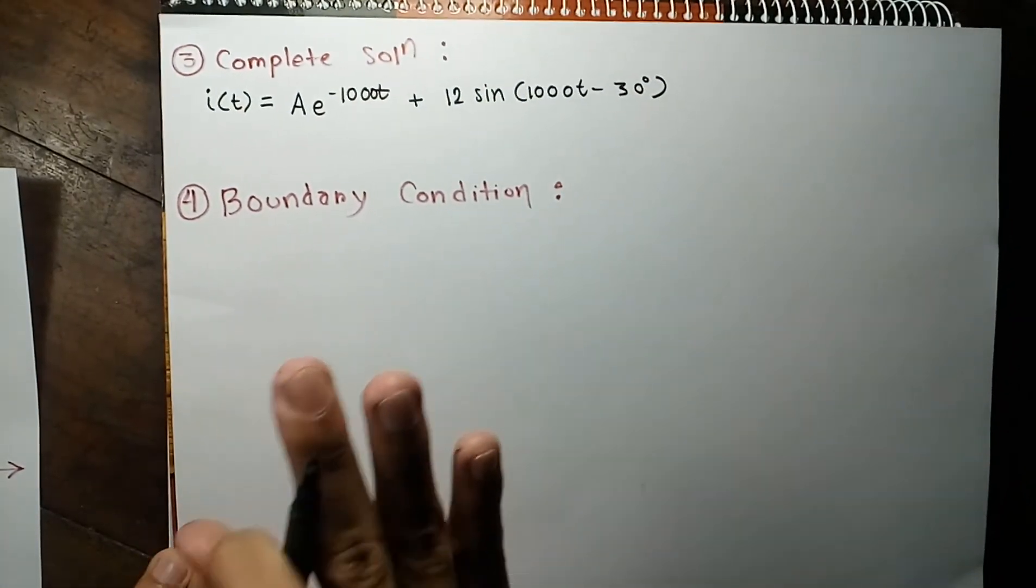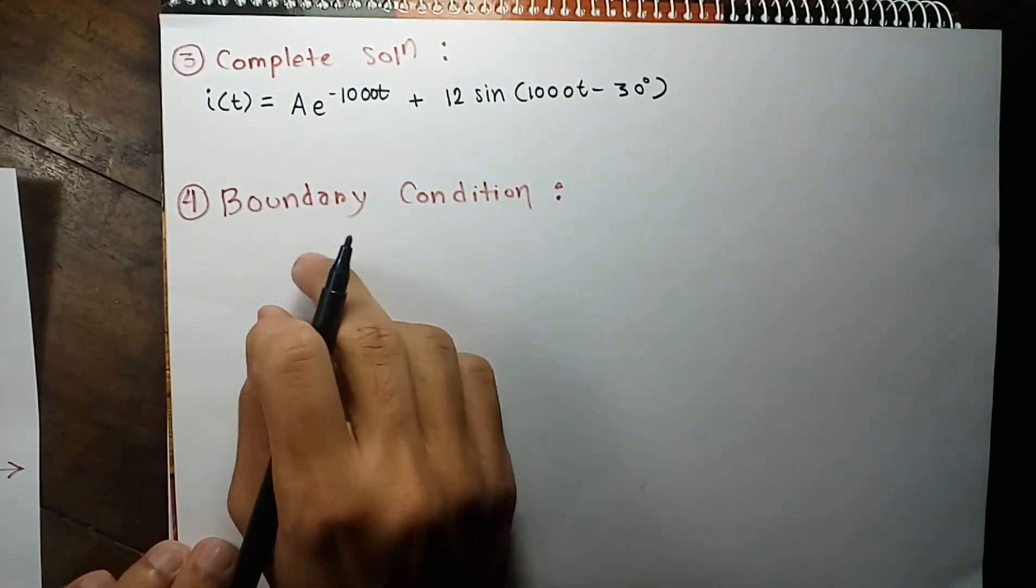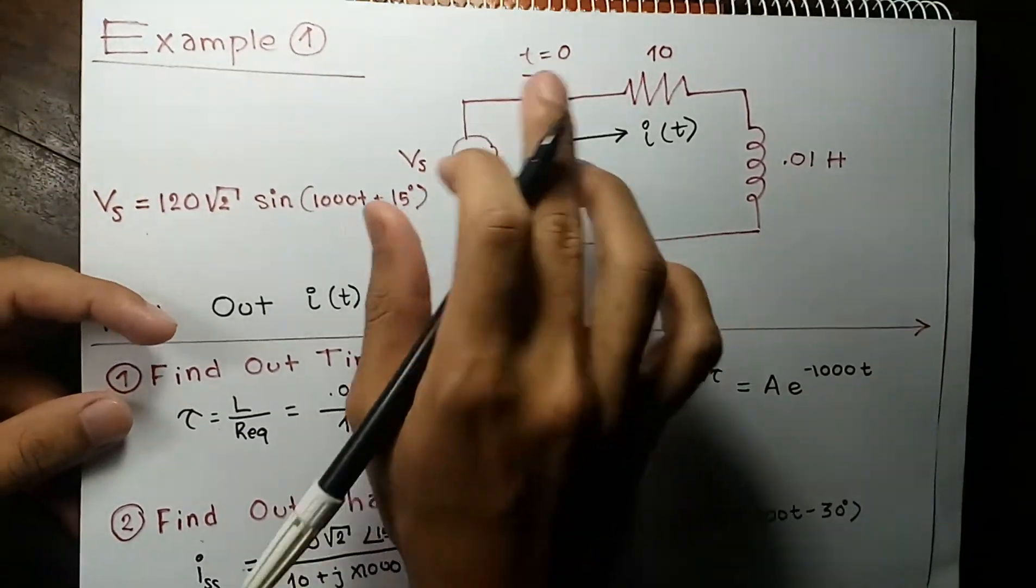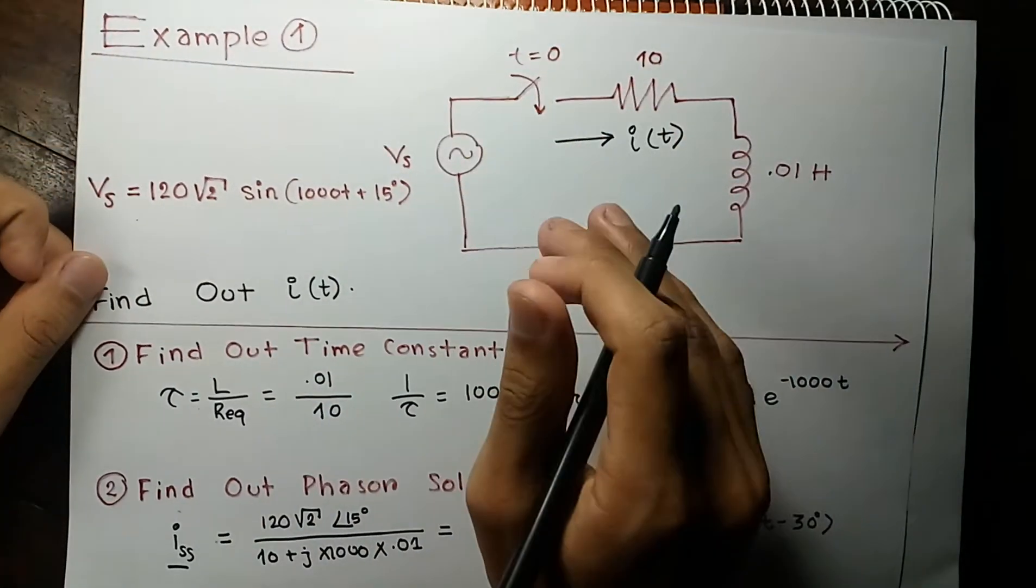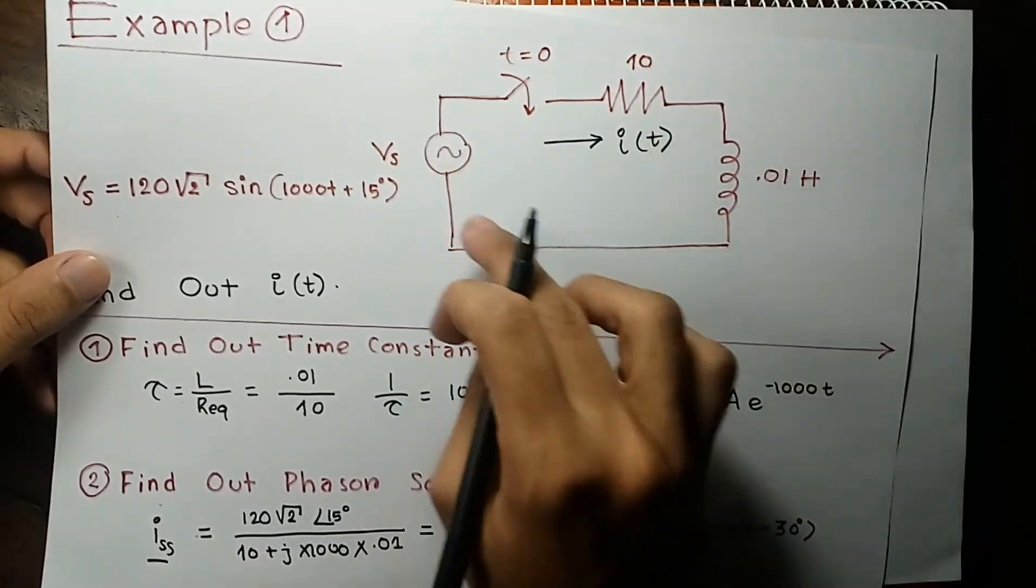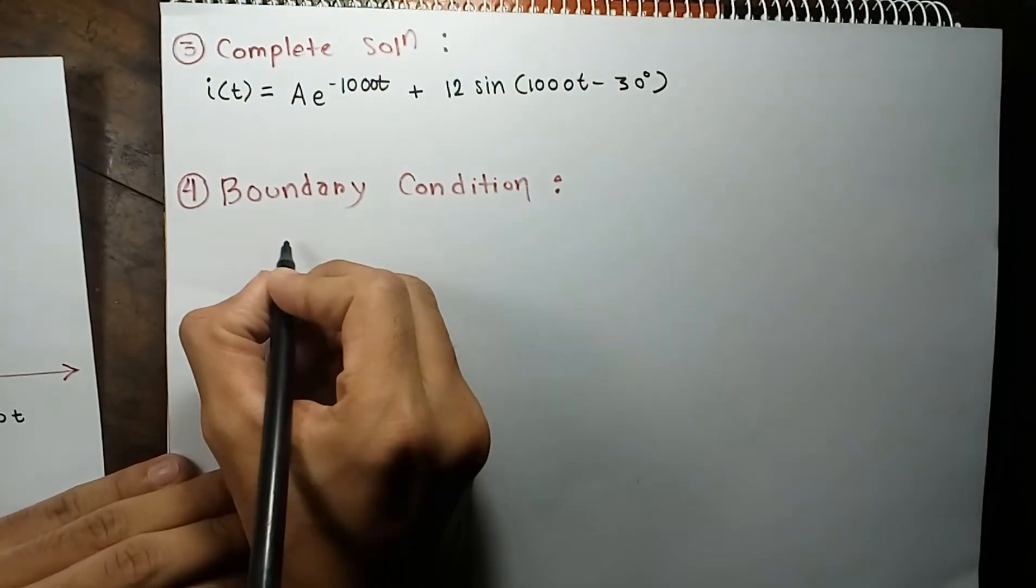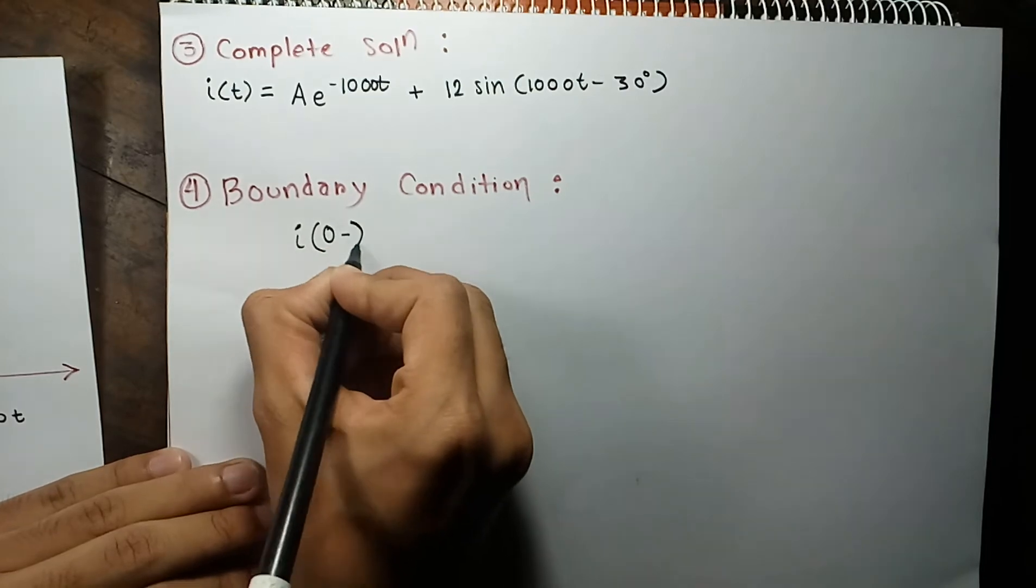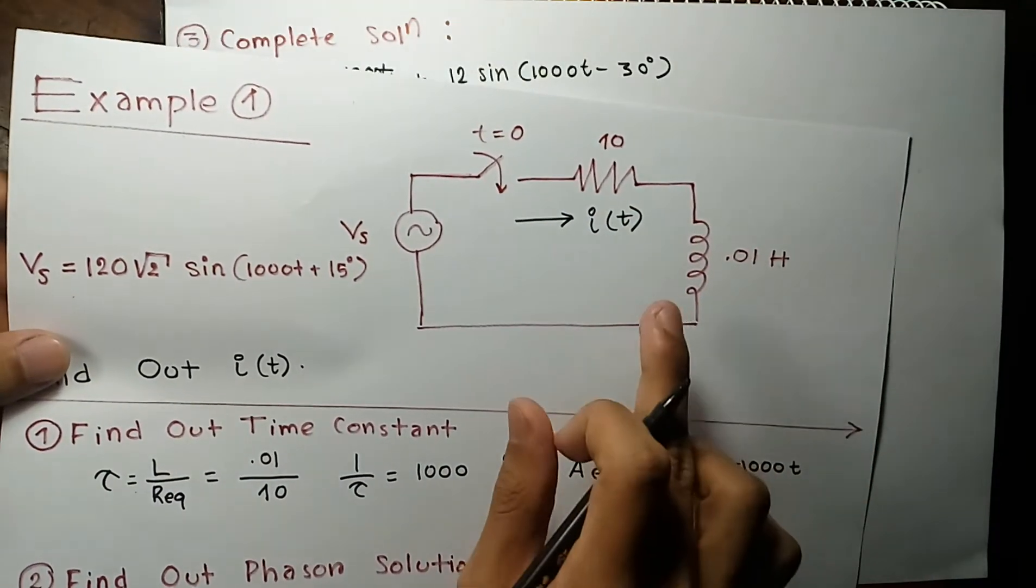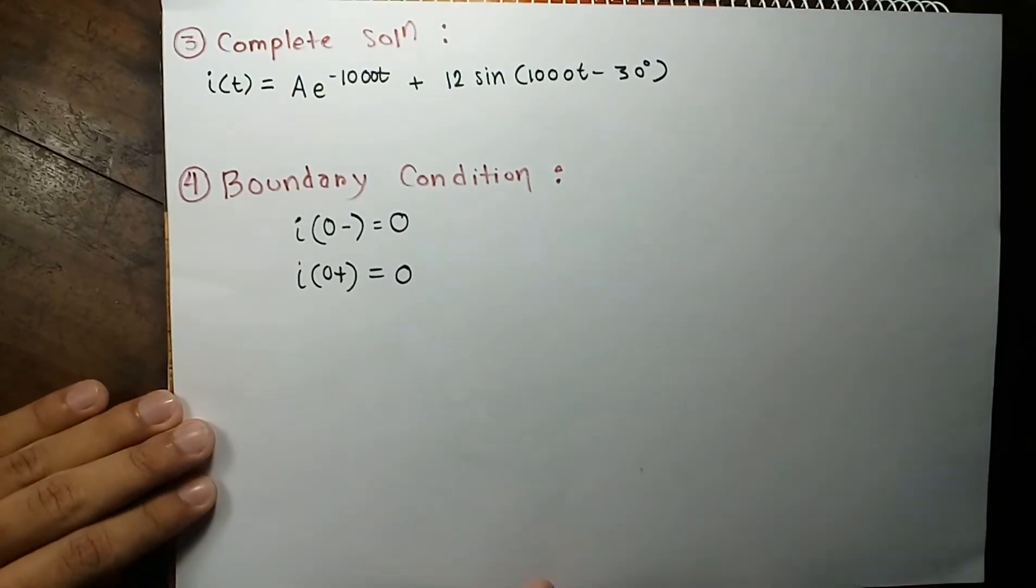And now comes the fourth part and most critical part. We have to evaluate the value of arbitrary constant A by solving boundary condition. Boundary conditions are really at the moment you do the switching operations. Before the switching operation this circuit was open really. So no current was flowing through the inductor. Current before switching I of 0 minus will be 0. And as we know that inductor current cannot change abruptly, I of 0 plus will be 0 also. That's our boundary condition.